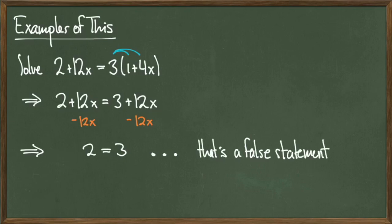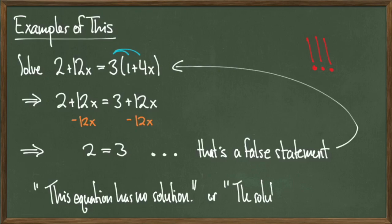So when we end up at a false statement like this, we can go back and realize that the equation we started with is also false. So when this happens, we can say the equation has no solution, or we can say that the solution set is the empty set, denoted by this 0 with a slash through it.